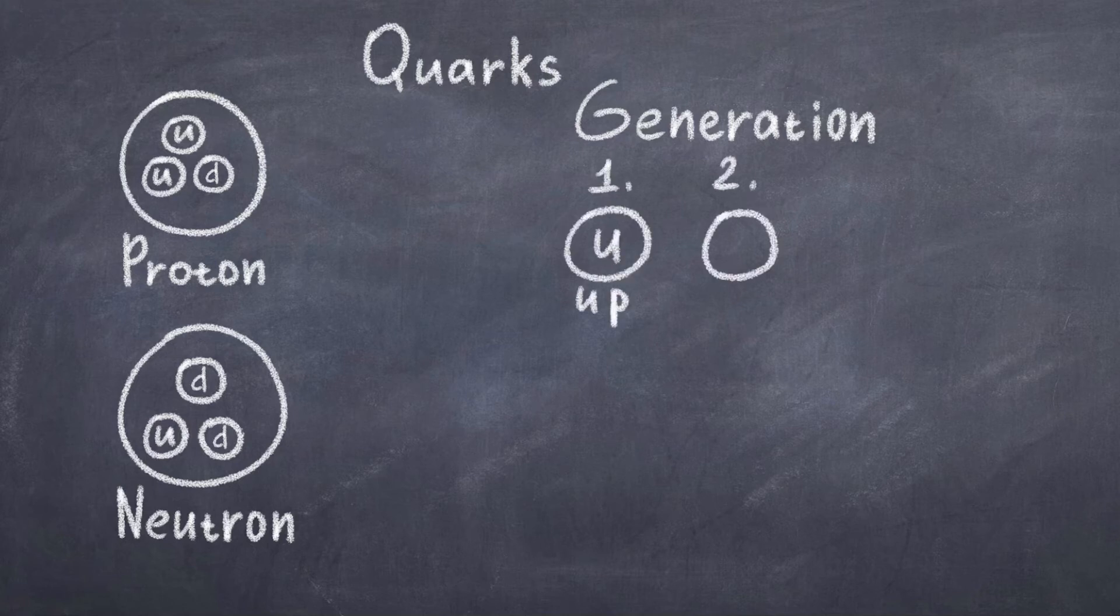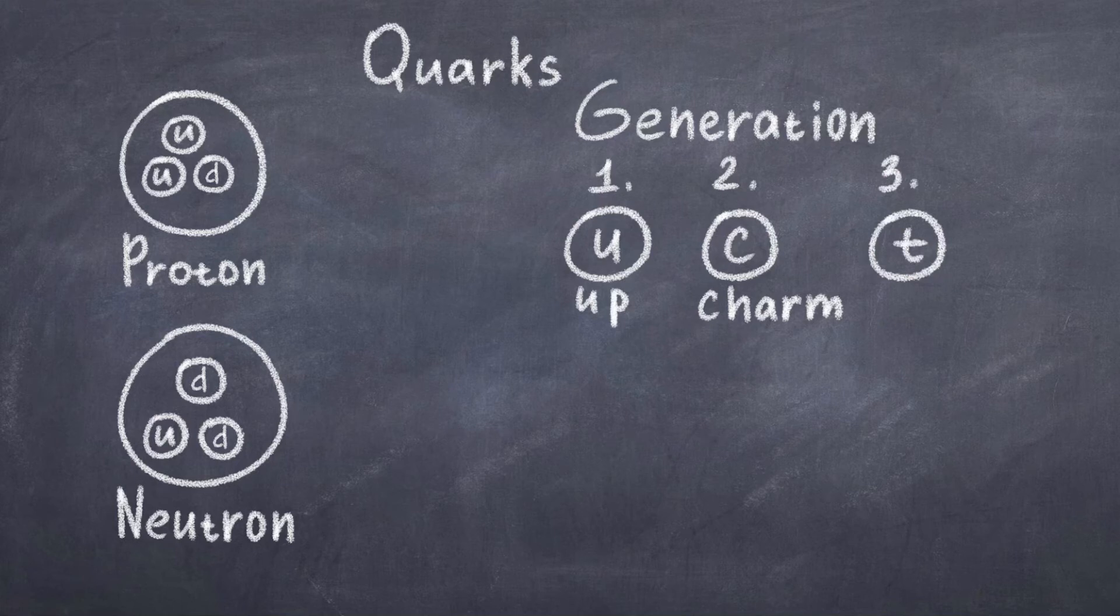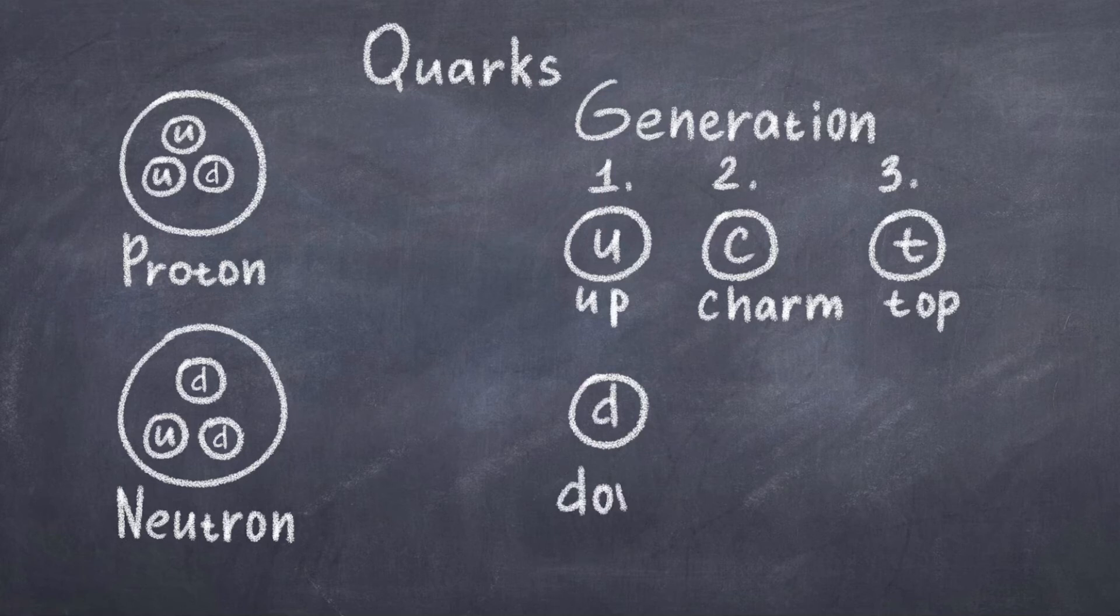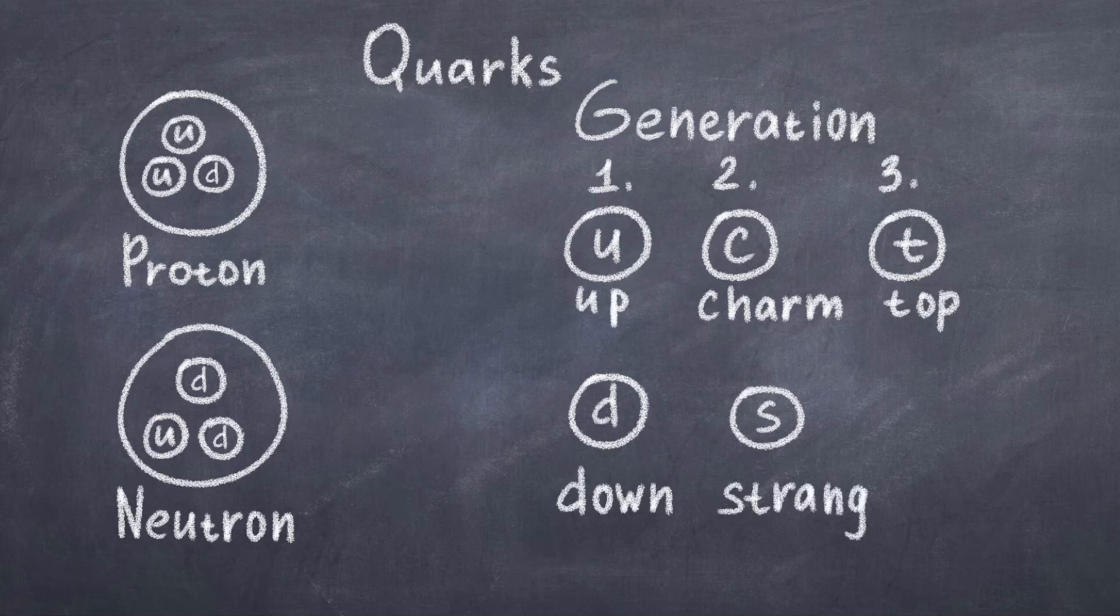The up and down quark belong to the first generation, but like with the leptons, there are three generations. So from the second generation we have the charm and strange quarks, which are heavier than the up and down quark. In the third generation we have the heaviest quarks, called the top and bottom quark. Thus we again have six quarks, just like we have six leptons.